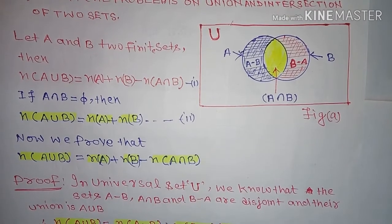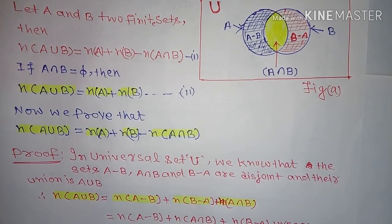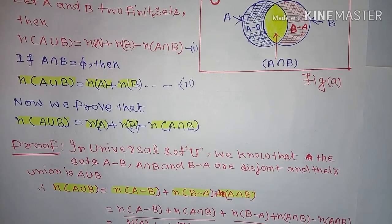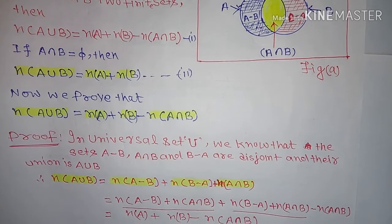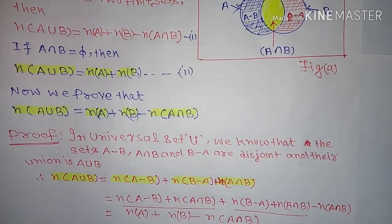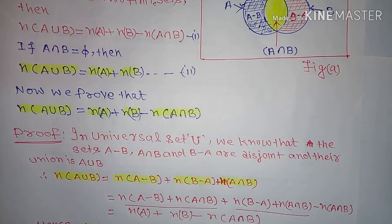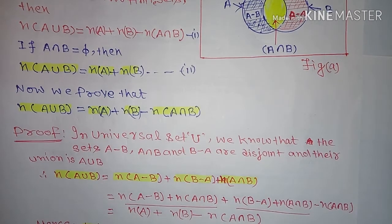Now we have to prove that n(A union B) is equal to n(A) plus n(B) minus n(A intersection B). Given universal set U as shown in the figure, we know that sets A minus B, A intersection B, and B minus A are disjoint, and their union is A union B.